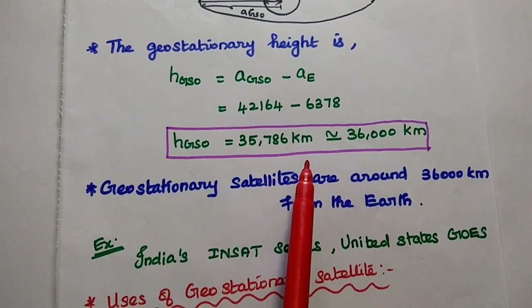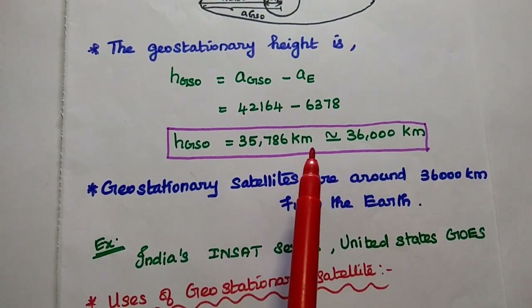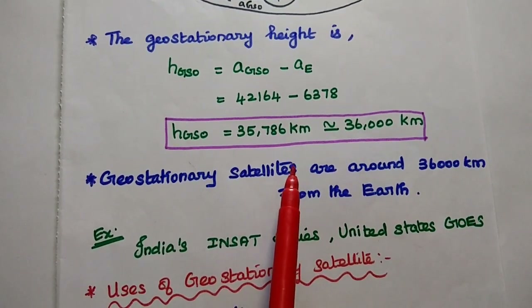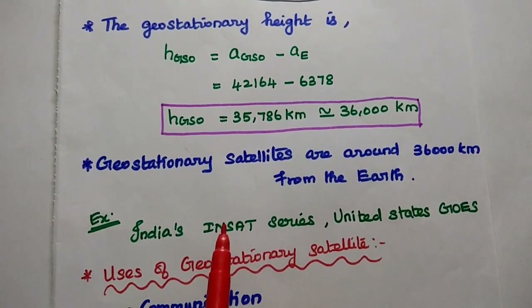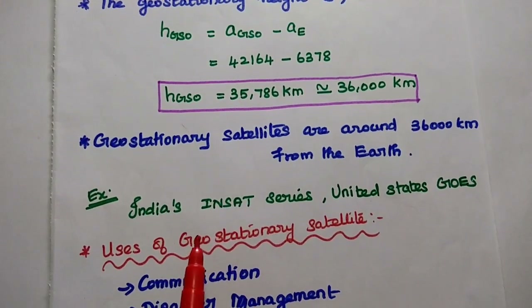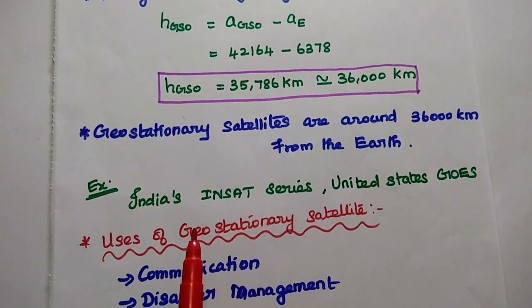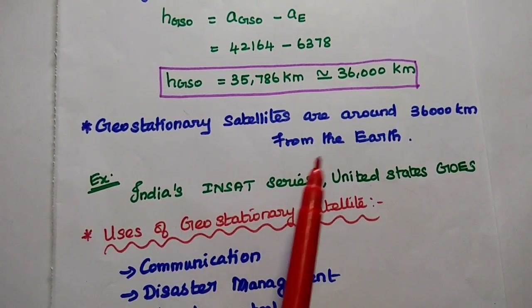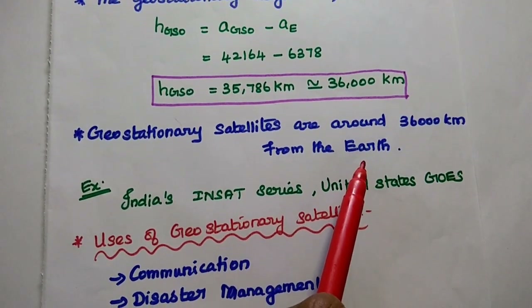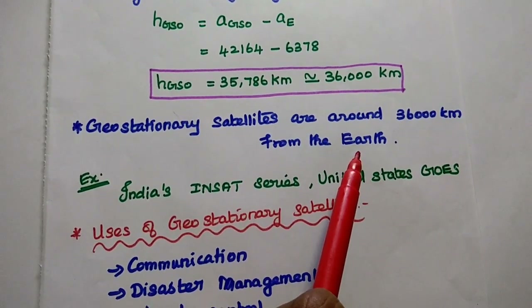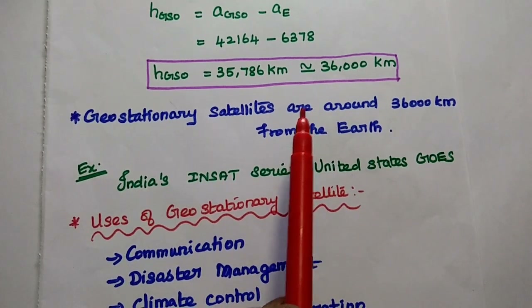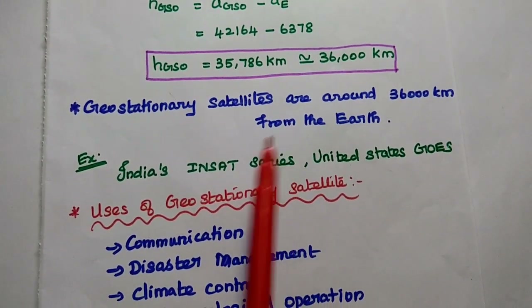The result is 35,786 kilometers. We can approximate this value as 36,000 kilometers. Therefore, we conclude that geostationary satellites are located approximately 36,000 kilometers from the earth. This is the height of the geostationary orbit.